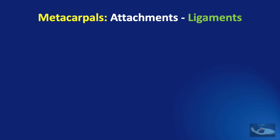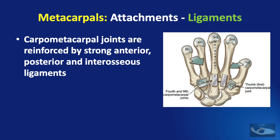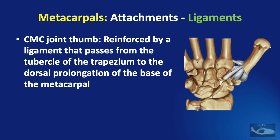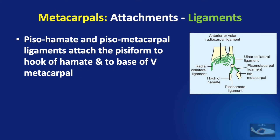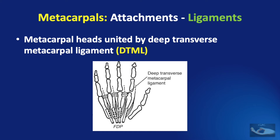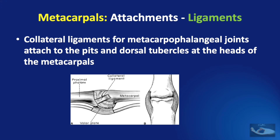The ligaments attached to the metacarpal bones are the carpometacarpal ligaments, which are particularly strong over the index and middle finger carpometacarpal joints. The carpometacarpal joint of the thumb is reinforced by a ligament from a tubercle on the trapezium to a dorsal prolongation on the base of the first metacarpal. The pisometacarpal and pisohamate ligaments attach the pisiform to the hook of the hamate and the base of the fifth metacarpal. The metacarpal heads are united by the deep transverse metacarpal ligament, and the collateral ligaments of the metacarpophalangeal joints attach to the pits and dorsal tubercles at the metacarpal heads.